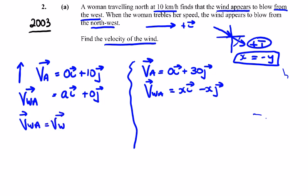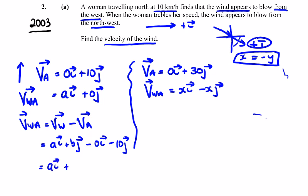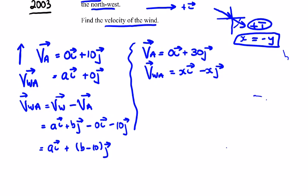The velocity of the wind relative to the woman is the velocity of the wind minus the velocity of the woman. We'll call the wind a in the i direction plus b in the j direction for the velocity of the wind, and then minus 10 in the j direction for the woman's velocity. That gives us a in the i direction plus b minus 10 in the j direction. Since there's nothing in the j direction for the velocity of the wind relative to the woman in the first case, b minus 10 equals zero, so b equals 10.